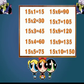Friends, I repeat table of 15, please follow me. 15 ones are 15. 15 twos are 30. 15 threes are 45. 15 fours are 63. 15 fives are 75. 15 sixes are 90. 15 sevens are 105. 15 eights are 120. 15 nines are 135. 15 tens are 150.